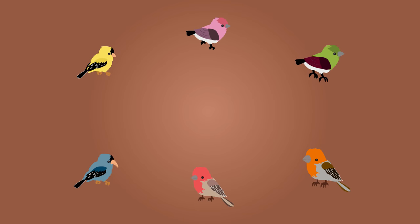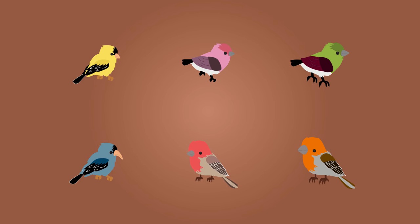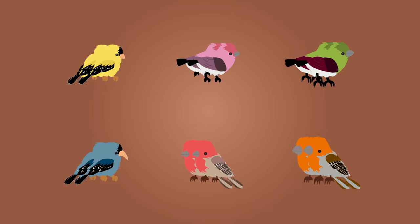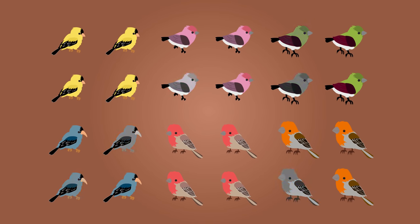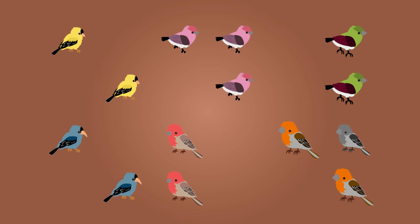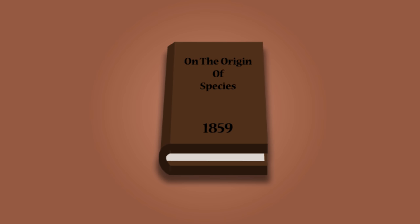Darwin proposed that the variations seen both within and between the finch species arose by chance. Variations which gave any individual a competitive advantage made them more likely to survive and therefore reproduce, out-competing those with less advantageous characteristics. Darwin called this theory natural selection and he published it in his book On the Origin of Species in 1859.